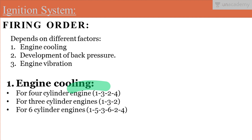This overheating of the engine can affect the cooling system. The engine cannot cool properly if fired in continuous order 1, 2, 3, 4. But if the firing order is in an alternate way — for example, after the 1st cylinder, the 3rd or 4th cylinder fires, and after that the 2nd cylinder — then the overheating problem can be avoided and the cooling system can work properly.